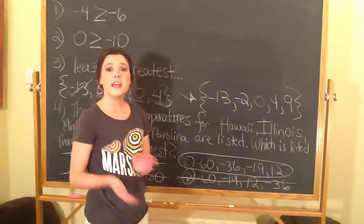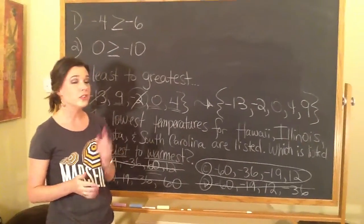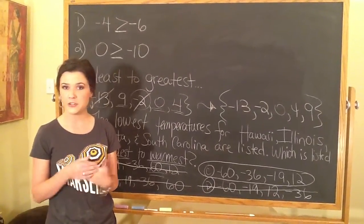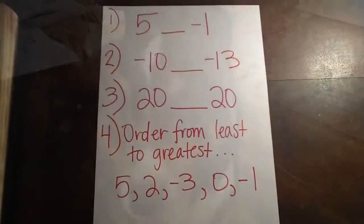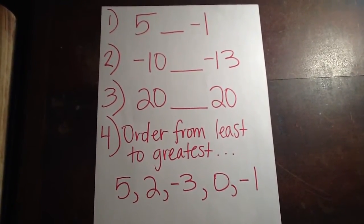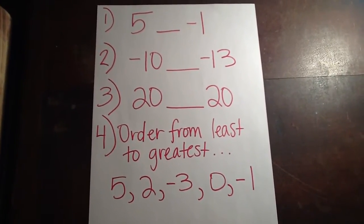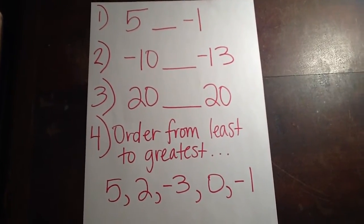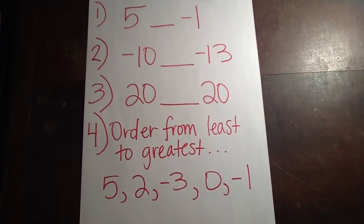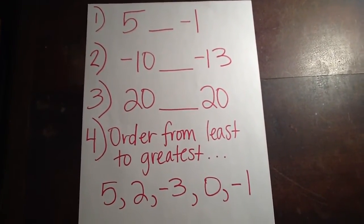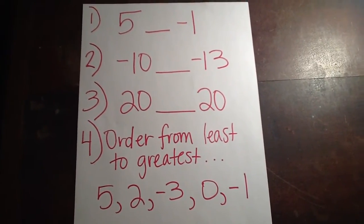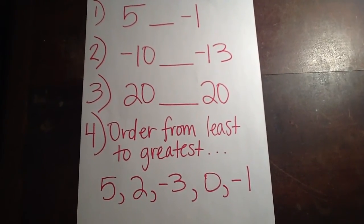Make sure you have your notes completed for tomorrow and look back through your book if you have questions. Try more examples, and come with questions tomorrow. You have four practice problems: numbers 1, 2, and 3 ask you to fill in the correct symbol — greater than, less than, or equal to. Number 4 asks you to order the numbers 5, 2, negative 3, 0, and negative 1 from least to greatest. Good luck!